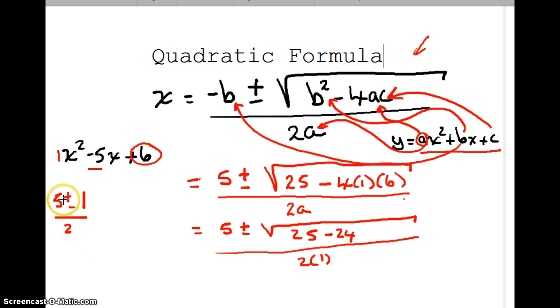And I'm going to move over here. So we have 5 plus or minus 25 minus 24 is 1. Square root of 1 is 1. 2 times 1 is 2. Now, we have two equations here, really, right? We have 5 plus 1 divided by 2. And we have 5 minus 1 divided by 2. And it's very important that you do both of those, because we are looking for all the solutions. So 5 plus 1 is 6. 6 divided by 2 is 3. 5 minus 1 is 4. 4 divided by 2 is 2.